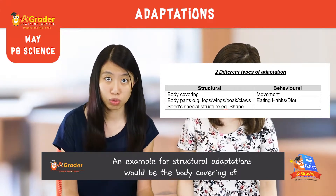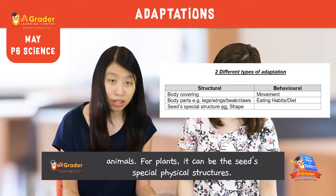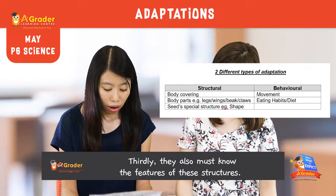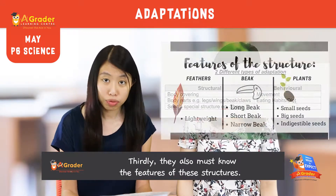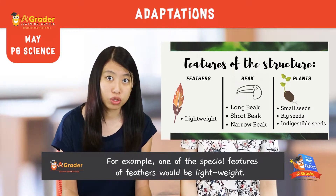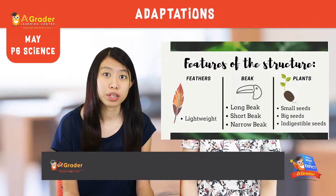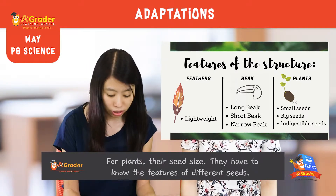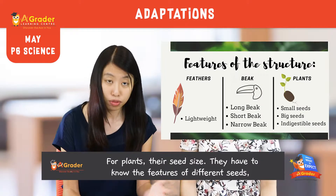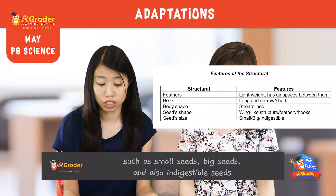An example of structural adaptations would be the body covering of animals. And for plants, they need to know the seed's special structure. Thirdly, they also have to know the features of these structures — for feathers, the feature is that they are lightweight. For beaks, there are many different types: long beak, short beak, or narrow wings. And for plants, they have to know the features of the seed structure, such as small seeds, big seeds, and indigestible seeds.